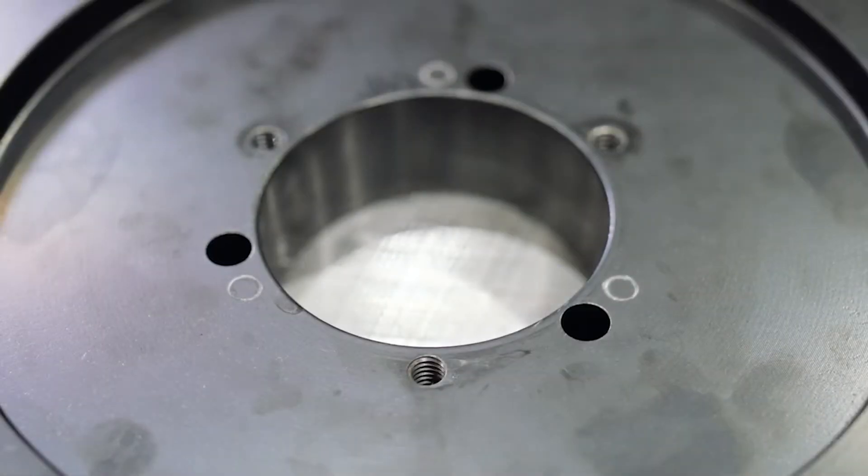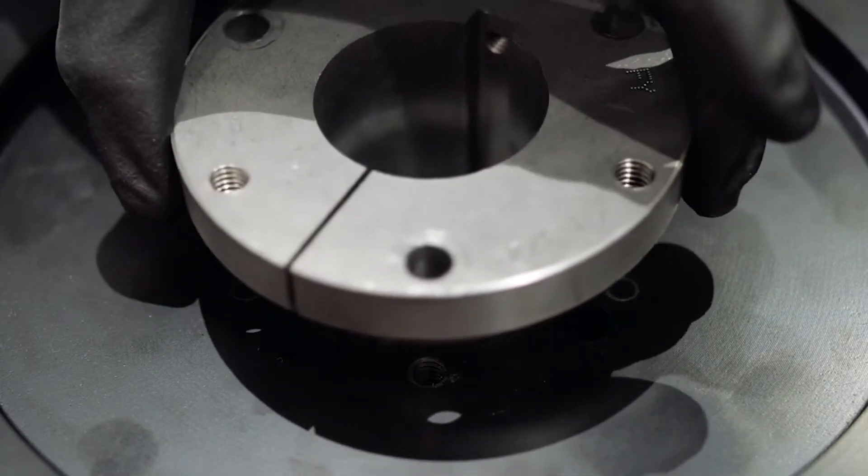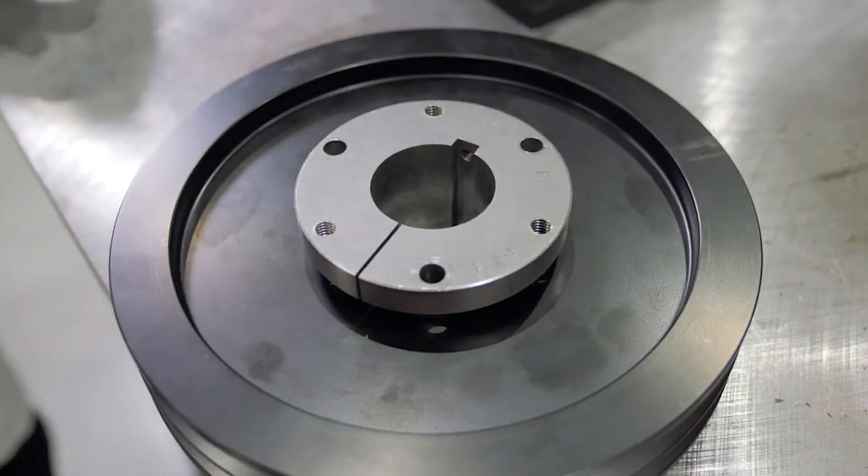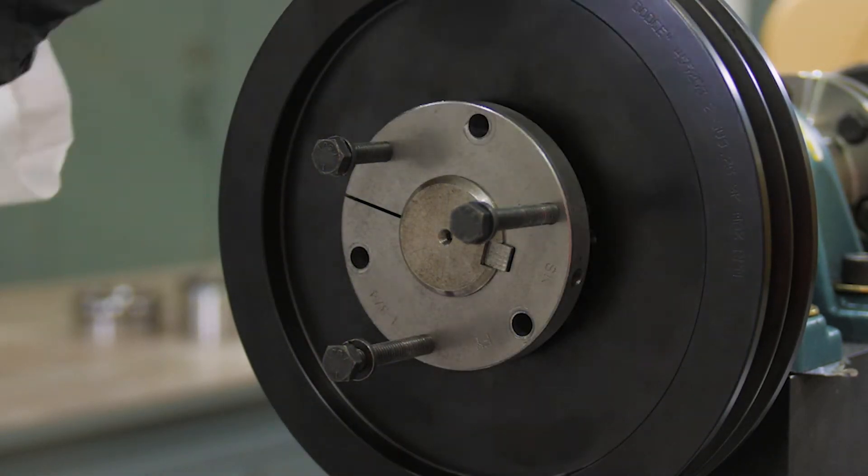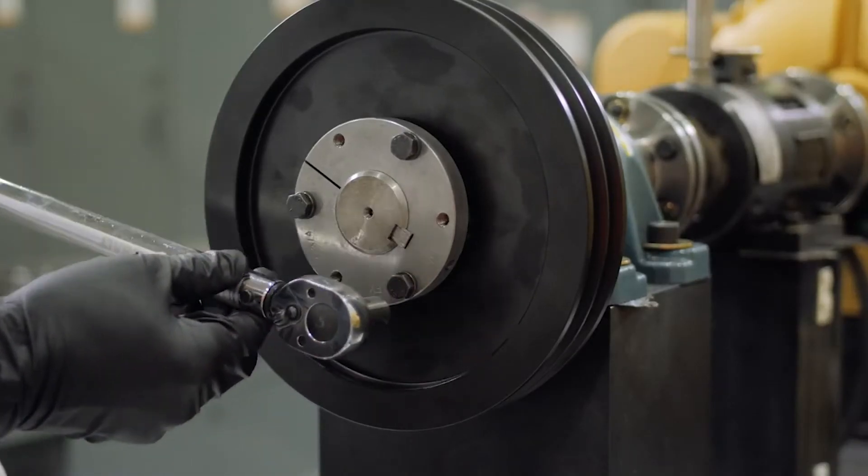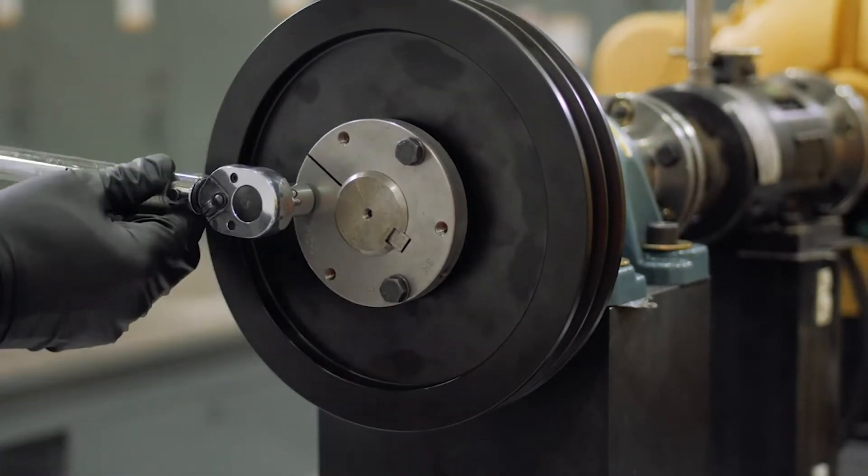Quick disconnect or QD bushings are a concentric shaft attachment method allowing easy installation and removal of V-belt sheaves, sprockets and couplings. This video demonstrates the installation and removal of QD bushings and is a supplement to instruction manual MN4049.